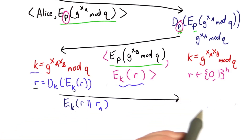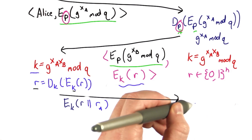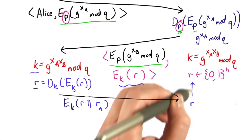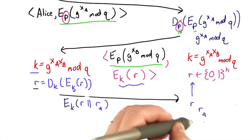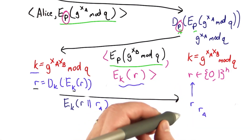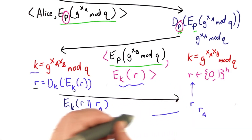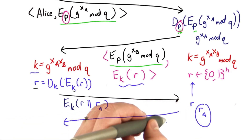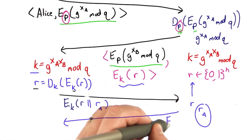Now the server can decrypt this, extract R, check that it matches, and extract that value. The server could then send that value back, encrypted with K.